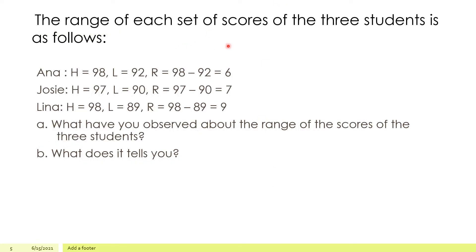The range of each set of scores of the three students as follows. What have you observed about the range? So Anna, ang kanyang highest score is 98. Ang lowest score niya is 92. So 6. Si Josie, 97 and 90. So 7. And then si Linda, ang lowest score niya is 89. Now, kung titignan natin dito, mas mababa. Mas mataas ang score ni Anna.